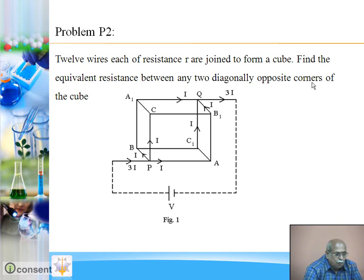We need to find the equivalent resistance between any two diagonally opposite corners of the cube. The cube is shown here. Let us find equivalent resistance between diagonally opposite corners P and Q. To determine equivalent resistance between P and Q, we imagine a battery or cell connected from P to Q. A cell or battery of potential difference V is connected between P and Q.